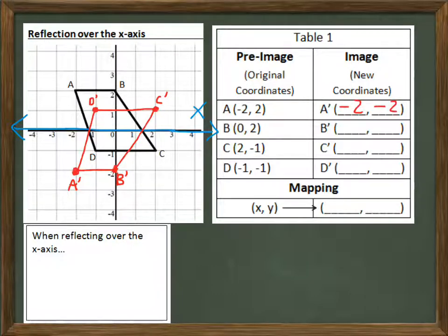A prime is negative two, negative two. B prime is zero, negative two. C prime is two, one. And D is negative one, one. So what happened to the coordinates when we reflected it? The x coordinates stayed the same. Negative two stayed negative two. Zero stayed zero. Two stayed two. And negative one stayed negative one. So x is going to stay x.